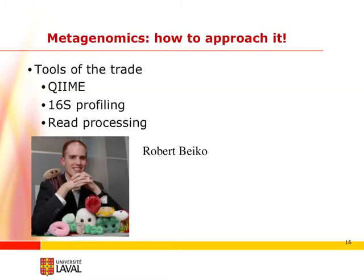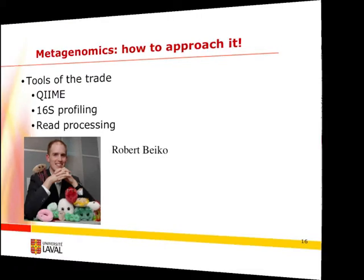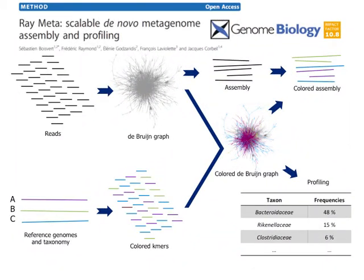I just want to tell you what's coming up. After me, you'll have metagenomics and how to approach it. We'll talk about the tools of the trade — 16S profiling, how we do the preprocessing — and this will be done by Robert. In essence, it all starts with the reads from the sequencer and the unit called the k-mer, which can be 21, 31, or 41 bases. In bacteria, that range is a little bigger. We assemble these reads with de Bruijn graphs and then do the assemblies.